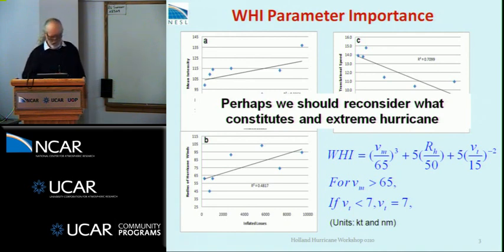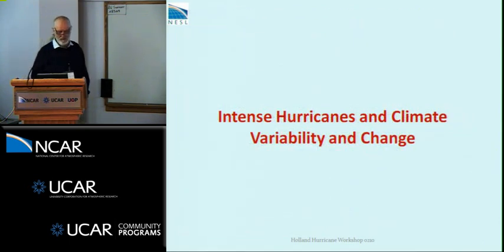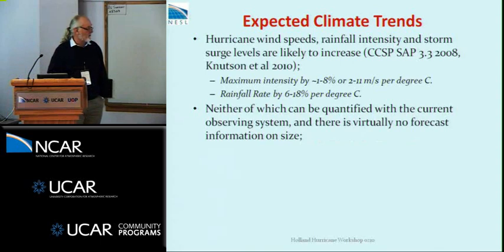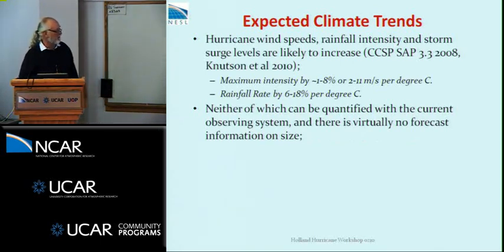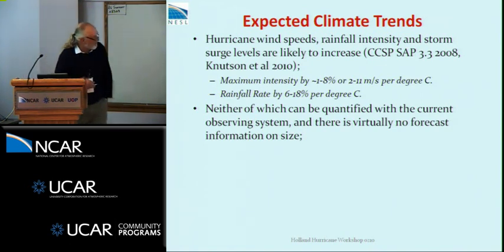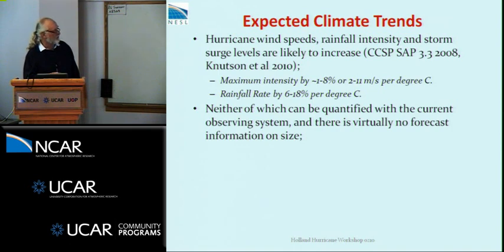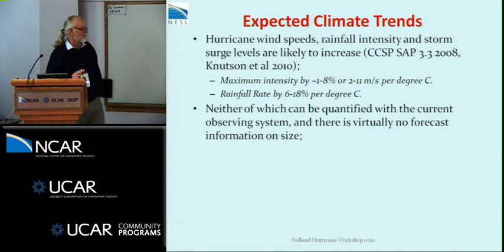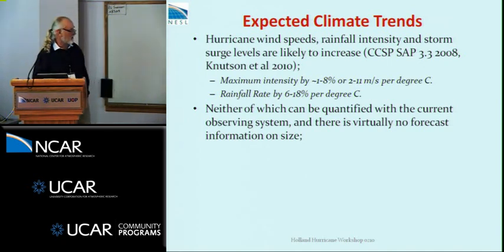The rest of the talk is on intense hurricanes and climate variability and change. I'll start with a couple of recent publications: the CCSP synthesis SAP report, and a recent paper by Knutson et al. with myself and others as co-authors. They're reasonably consistent — maximum intensity will increase by somewhere around 1% to 8%, which equates to 2 to 11 metres per second. Rainfall rate will also increase. Everything I'm presenting applies to any extreme value in the atmosphere — it's about general extreme values.